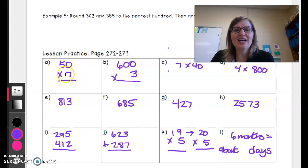First is 50 times 7. I know that 5 times 7 is 35 and then I just put down one zero.